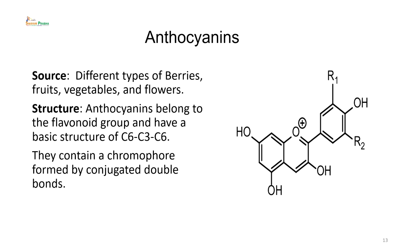Then comes anthocyanins. The sources are different types of berries, fruits, vegetables, and flowers. Among fruit, beetroot is one of the most famous examples. The structure of anthocyanin belongs to the flavonoid group with a basic structure of C6-C3-C6. They contain a chromophore formed by conjugated double bonds, and hydroxy groups at different positions act as oxochromes.